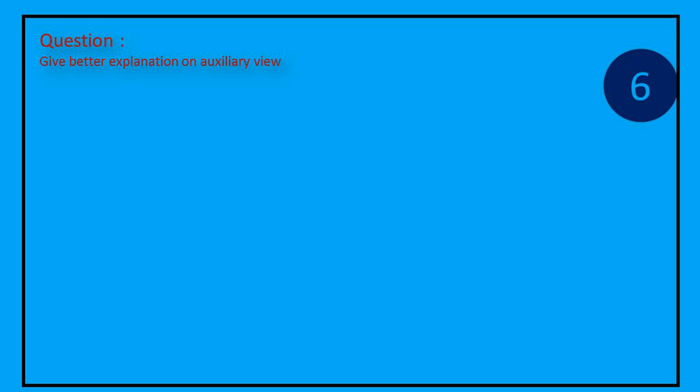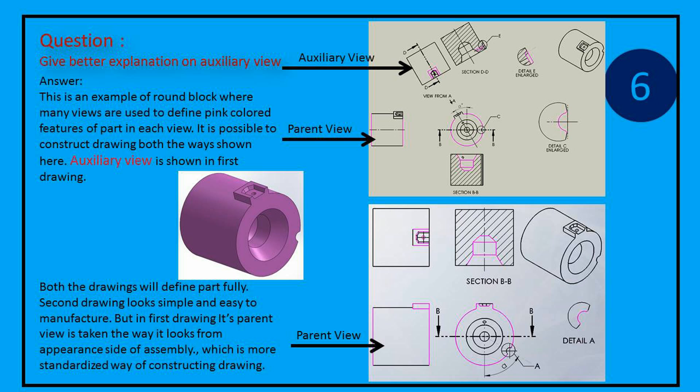Question: Give better explanation on auxiliary view. Answer: This is an example of round block where many views are used to define pink colored features of part in each view. It is possible to construct drawing both the ways shown here.